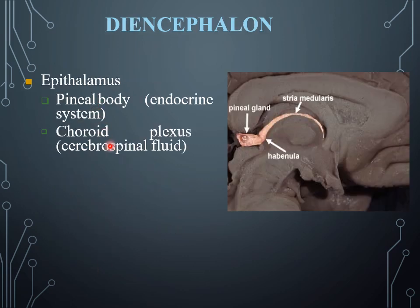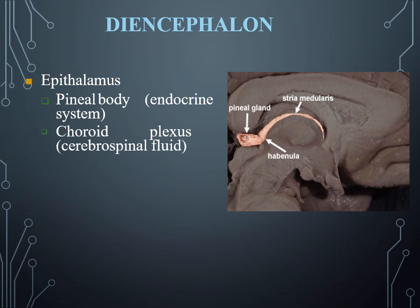The epithalamus part of the diencephalon contains the pineal body, which contains endocrine glands. The pineal gland, stria medullaris, and habenula are present here. This region also contains the choroid plexus, which produces cerebrospinal fluid.